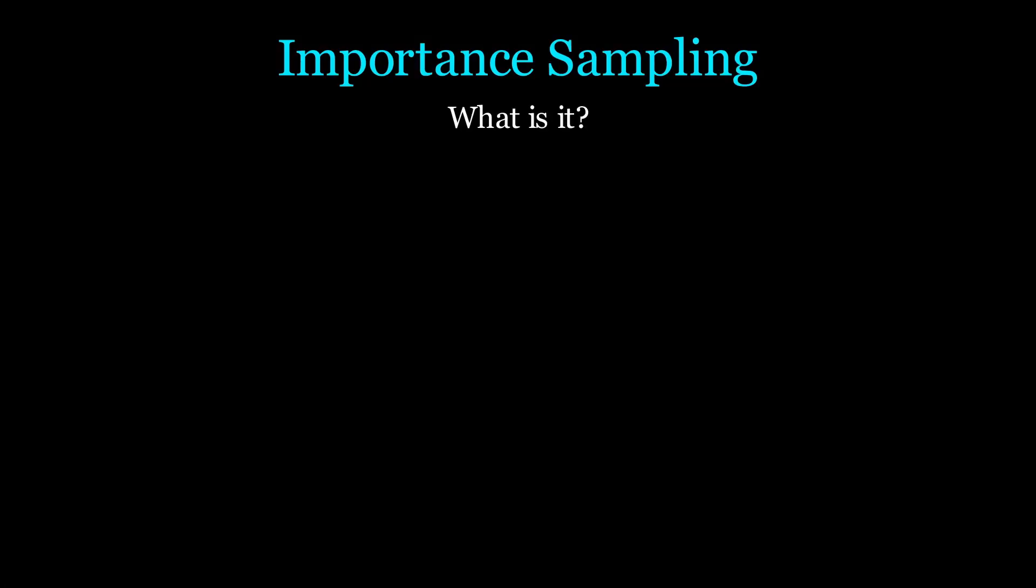Welcome. Importance sampling is a crucial technique used in machine learning and robotics. It's very useful when dealing with complex probability distributions we cannot directly sample from.